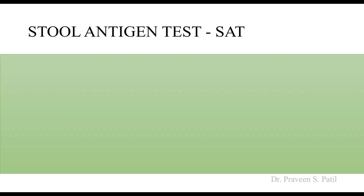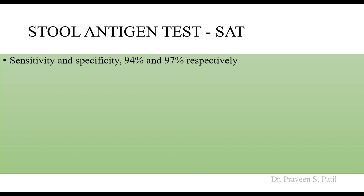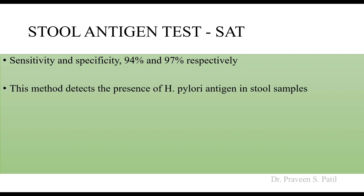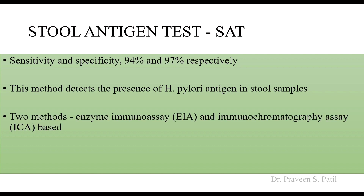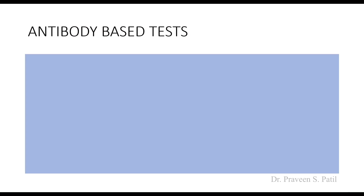The stool antigen test (SAT) has sensitivity of 94 percent and specificity of 97 percent. It detects the presence of H. pylori antigen in the stool sample, making it a non-invasive method. There are two methods: enzyme immunoassay (EIA) and immunochromatography assay. Among these, EIA is considered more reliable.